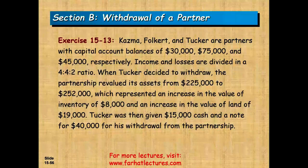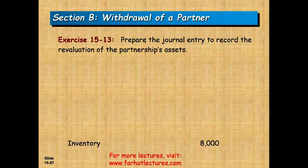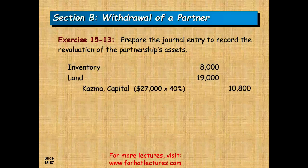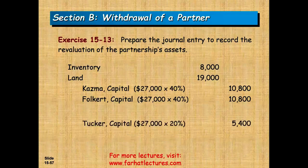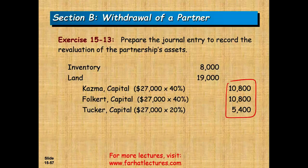To prepare the journal entry for the revaluation: debit the assets to increase them (inventory $8,000, land $19,000) and credit the increase allocated to each partner's capital account. The next step is to record the withdrawal of T.